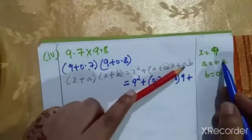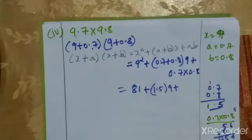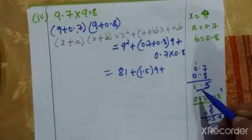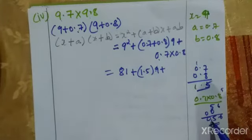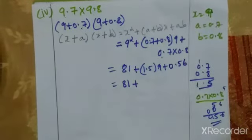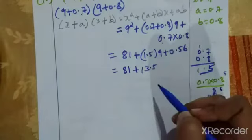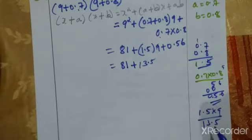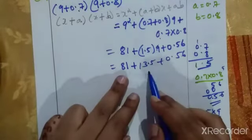Now applying the values: 9² + (0.7+0.8)×9 + 0.7×0.8. So 9 squared is 81, 0.7+0.8 is 1.5, and 0.7 into 0.8 gives 0.56. Then 1.5 into 9 is 13.5. So we have 81 + 13.5 + 0.56.